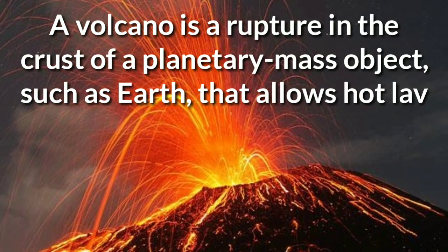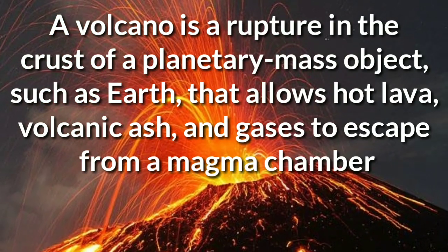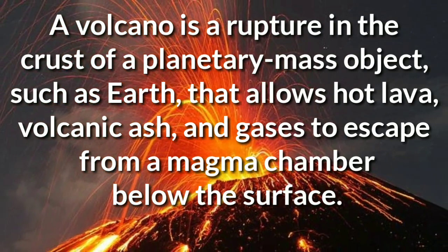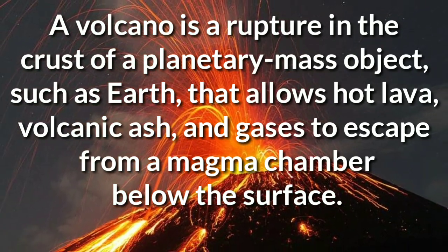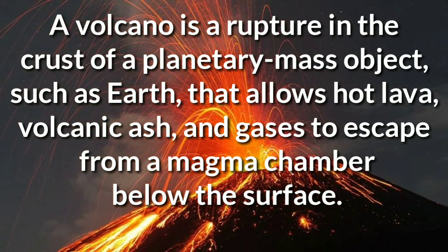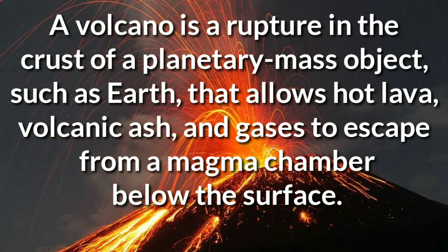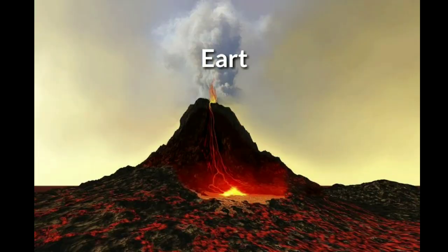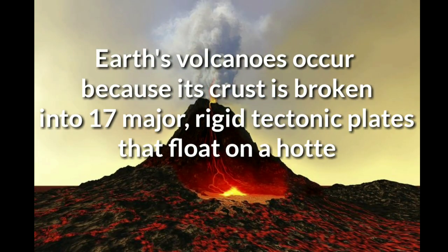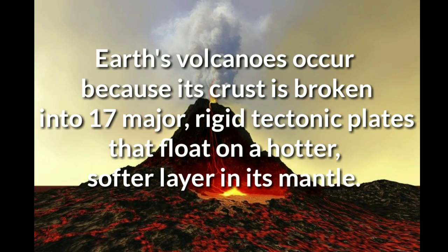A volcano is a rupture in the crust of a planetary mass object, such as Earth, that allows hot lava, volcanic ash, and gases to escape from a magma chamber below the surface. Earth's volcanoes occur because its crust is broken into 17 major, rigid tectonic plates that float on a hotter, softer layer in its mantle.